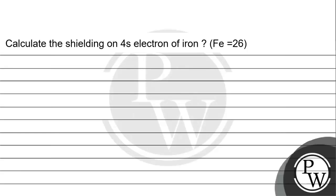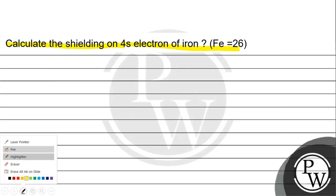Hello! Let's read this question. The question says: calculate the shielding on the 4s electron of iron. Iron has the atomic number 26.